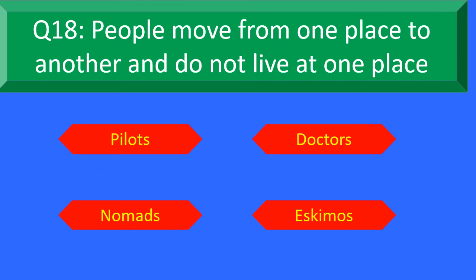Question number 18. People who move from one place to another and do not live at one place — Option A: Pilots, Option B: Daughters, Option C: Nomads, and Option D: Eskimos. Your time starts now.